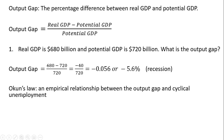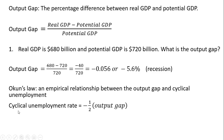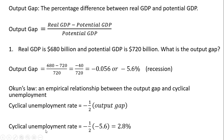In terms of Okun's Law, it's an empirical relationship between the output gap and cyclical unemployment. According to Okun's Law, the cyclical unemployment rate will equal minus one-half the output gap. So in our example here, we could estimate that the cyclical unemployment rate is 2.8%.